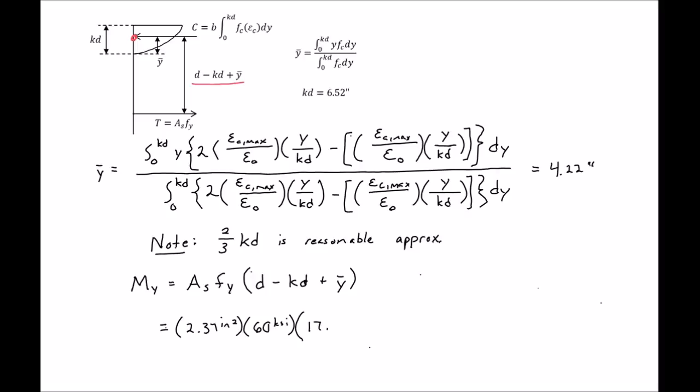Our D is 17.6, our KD is 6.52, our Y bar we found was 4.22. And then, plugging all these in, we'll find our moment to be 2,180 kip inches. So we can use this moment with our curvature that we found previously and plot this on our moment curvature plot.